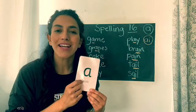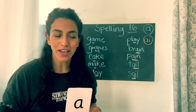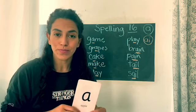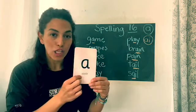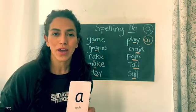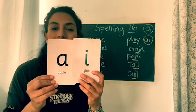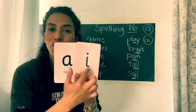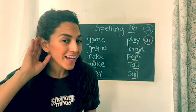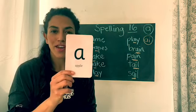The long A sound sounds like A. The short sound for A is like 'apple.' But the long sound of A sounds like the words we have here. We also have another sound: A-I together also sounds like A. Remember your Jolly Phonics? So we have A and we have A-I.